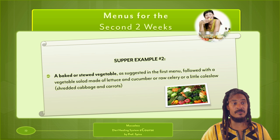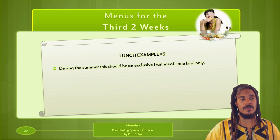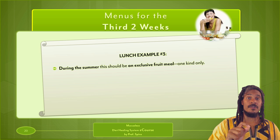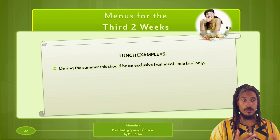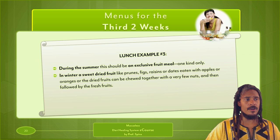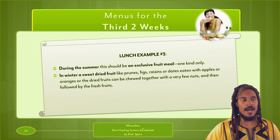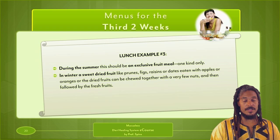For the third two weeks, the lunch example during summer should be an exclusive fruit meal — one kind only. Now we're starting to talk about fresh fruits: a full month after you started practicing the diet. If you follow this plan, for that first month you wouldn't even have raw fruits — only stewed or baked fruits. In winter, a sweet dried fruit like prunes, figs, raisins, or dates with apples or oranges can be eaten, or the dried fruits can be chewed together with a few nuts followed by fresh fruit.